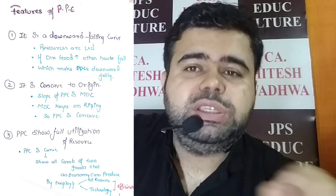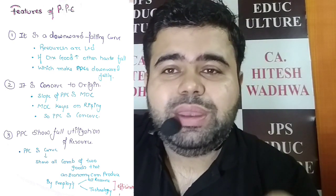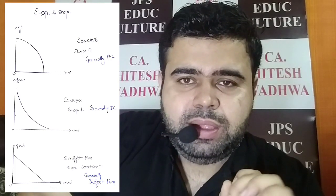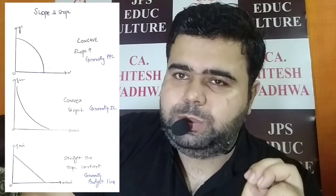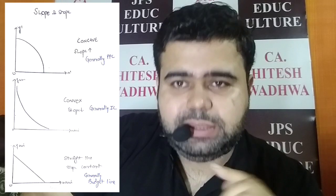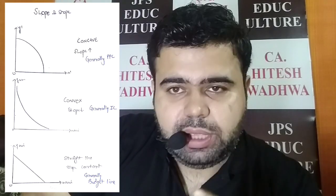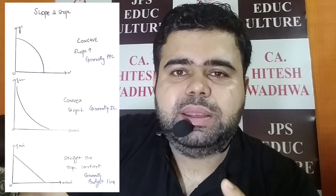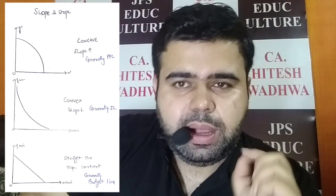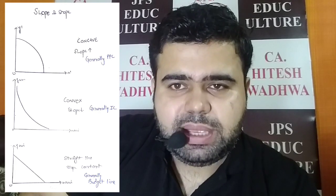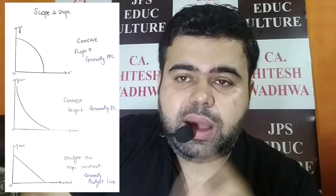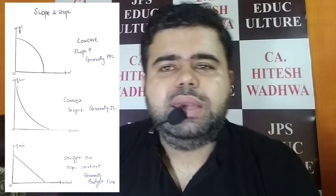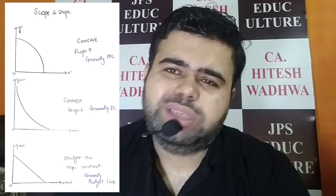अगली चीज़ आती है — Production Possibility Curve is concave. अब ये concave क्यों है? Curve की बच्चों 3 shapes होती हैं: either it is convex, or it is concave, or it is a straight line. इनकी जो shape होती है, वो depend करती है इनकी slope पे. अगर किसी का slope increasing है तो वो concave बनेगा, अगर slope decreasing है तो वो convex बनेगा, अगर slope constant है तो वो एक straight line बनेगी.